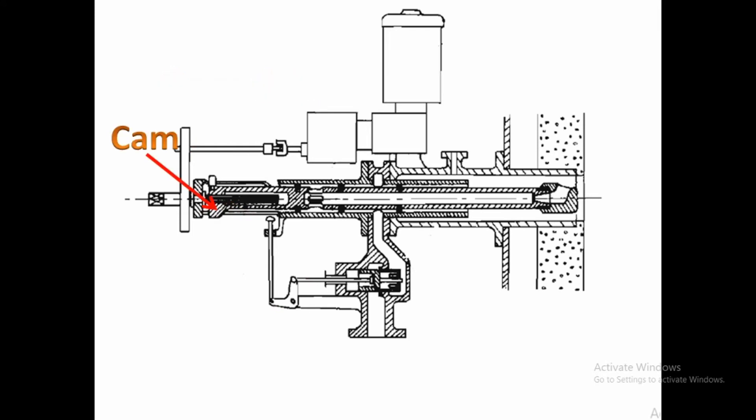There is a cam constructed on the spindle which operates the opening of the double seat valve. There is also a valve operating mechanism to actuate the opening of the double seat valve relevant to the spindle movement.